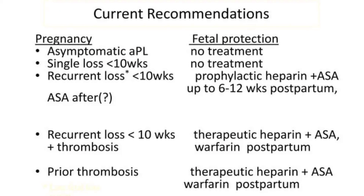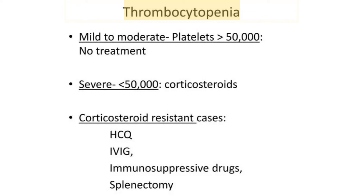In pregnancy, asymptomatic patients and those with a single fetal loss require no treatment. Recurrent fetal loss warrants prophylactic heparin plus aspirin up to 6–12 weeks postpartum. Recurrent loss with thrombosis requires therapeutic heparin plus aspirin, followed by warfarin postpartum. Prior thrombosis requires therapeutic heparin plus warfarin, followed by aspirin and warfarin postpartum. For mild thrombocytopenia (seen in 20% of patients), no treatment is needed; if platelets fall below 50,000, corticosteroids, hydroxychloroquine, IVIG, or splenectomy may be considered.